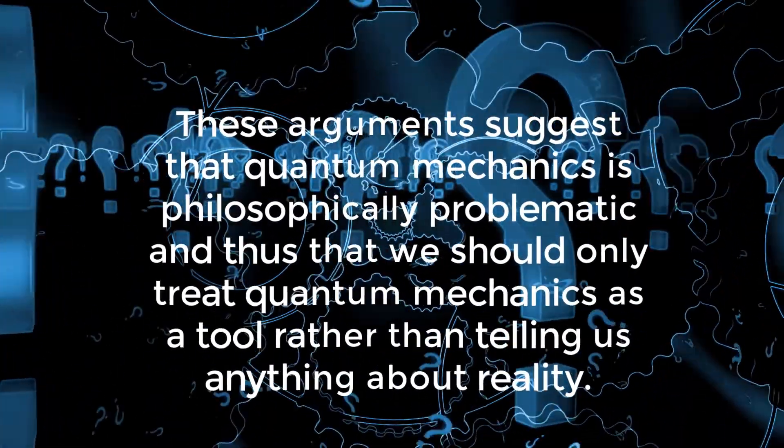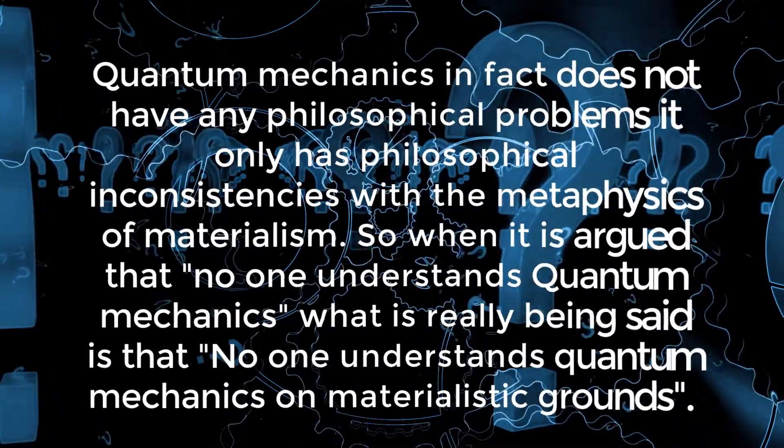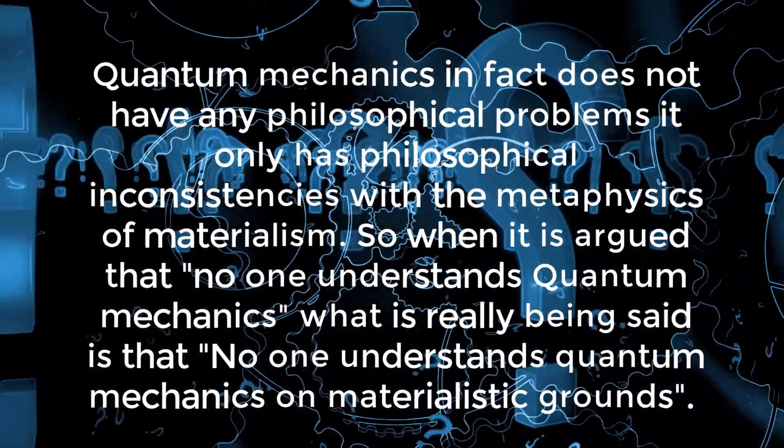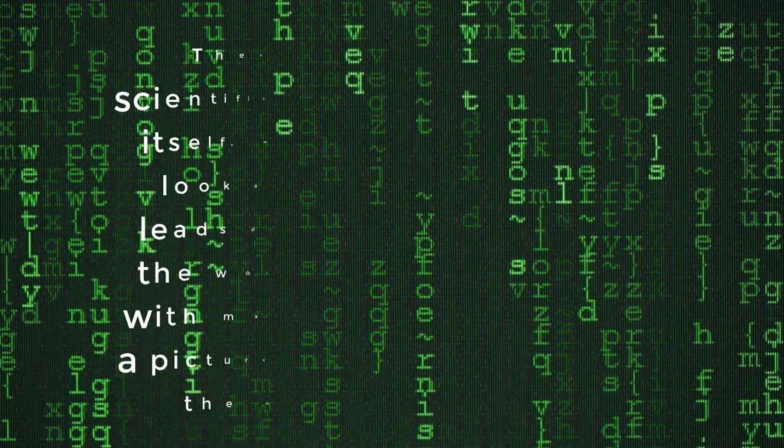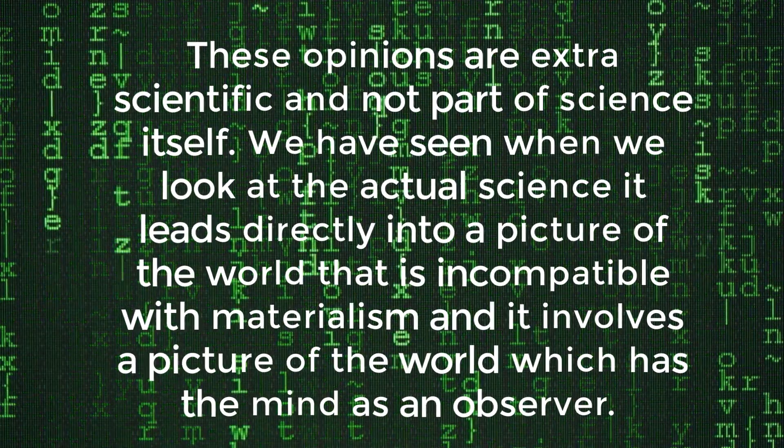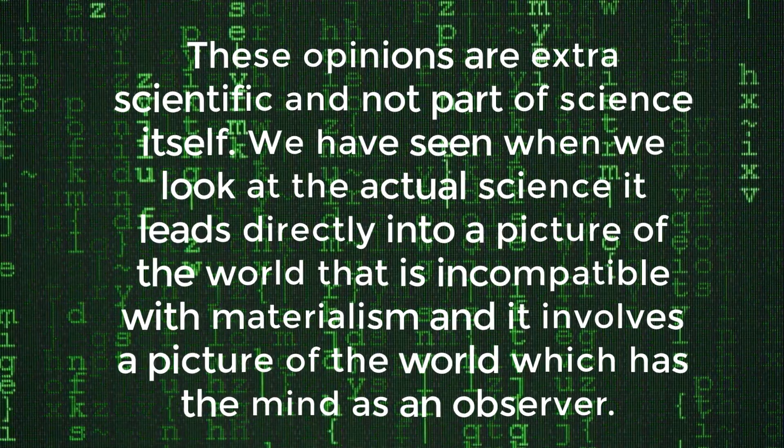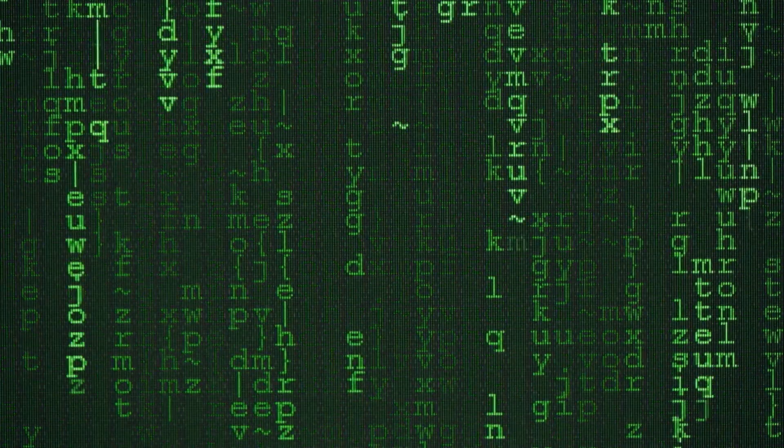Now, given all this evidence, some try to argue that no one really understands quantum mechanics, and thus no conclusions can be drawn from it. These arguments suggest that quantum mechanics is philosophically problematic, and thus we should only treat quantum mechanics as a tool rather than telling us anything about reality. However, quantum mechanics in fact does not have any philosophical problems. It only has philosophical inconsistencies with the metaphysics of materialism. So, when it is argued that no one understands quantum mechanics, what is really being said is that no one understands quantum mechanics on materialistic grounds. However, these opinions are extra-scientific and not part of science itself. We have seen that when we look at the actual science, it leads directly to a picture of the world that is incompatible with materialism, and it involves a picture of the world where mind is an observer. Here, the viewer is encouraged to remember that when these sort of opinions are asserted without evidence, they can be equally well dismissed by not having evidence.